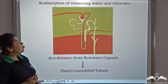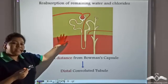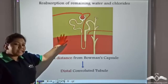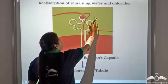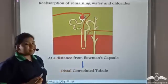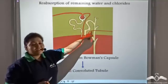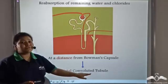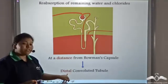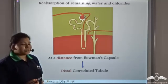The reabsorption of the remaining water and the chlorides take place in this portion which is away from the Bowman's capsule. Even this portion is convoluted. And so it is known as the distal convoluted tubule. Distal, because it is situated away from the Bowman's capsule.